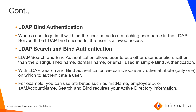If the LDAP server authenticates the provided password successfully, the user will be able to log into MDM. LDAP works in two levels of authentication: the first is LDAP Bind Authentication, and the next is LDAP Search and Bind Authentication. In LDAP Bind Authentication, when a user logs in, it binds the username to a matching username in the LDAP server. If the LDAP bind succeeds, the user is allowed access.